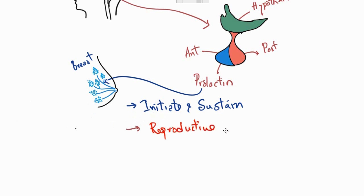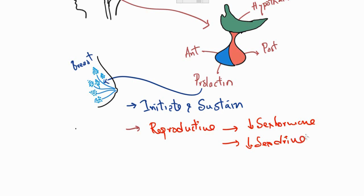Prolactin has an inhibitory effect on the reproductive system by decreasing female sex hormones, which results in issues with ovulation and absence of menstrual cycles. It also decreases sexual drive. During the nursing period, all resources are focused on nursing the newborn, so prolactin suppresses the reproductive system by having negative effects on sexual hormones.